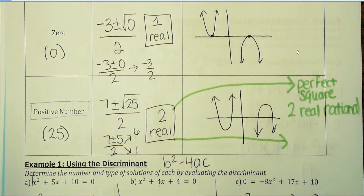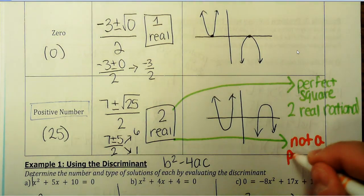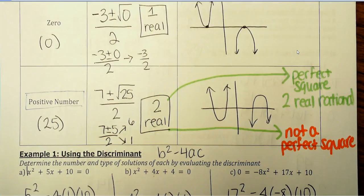your two real solutions are going to be what we call rational, like a nice number that can be written as a fraction. The other thing that can happen, if you don't have a perfect square, any other number that's not a perfect square, so if it doesn't have a nice square root,